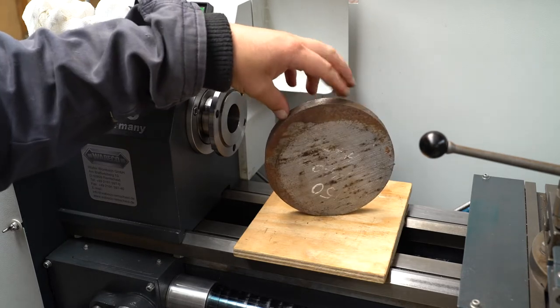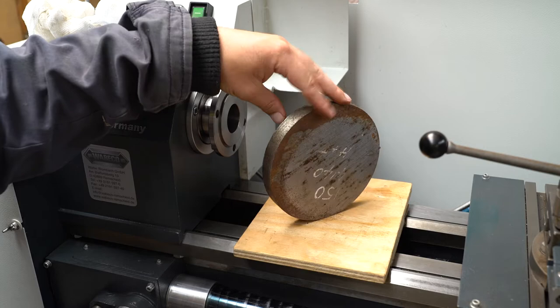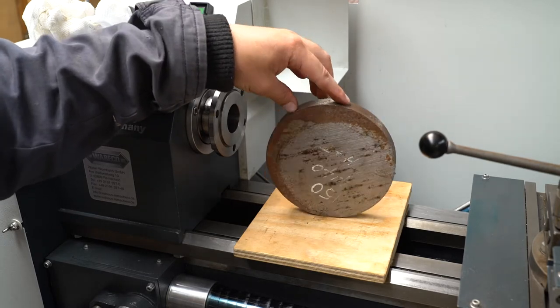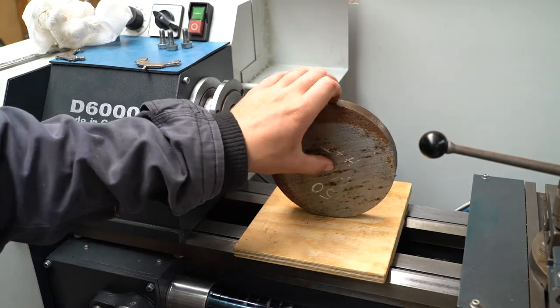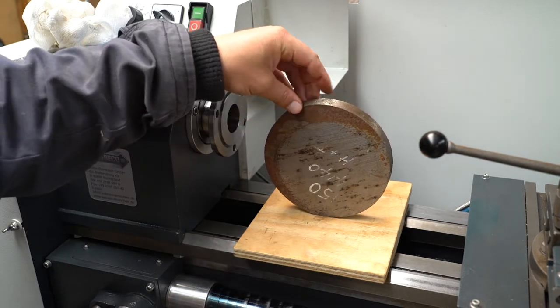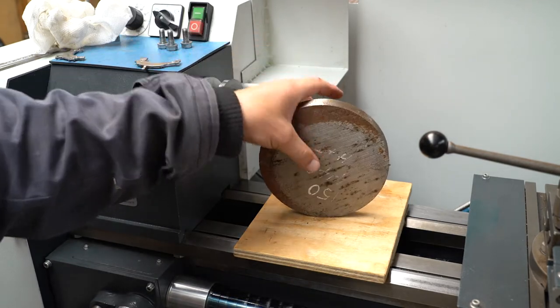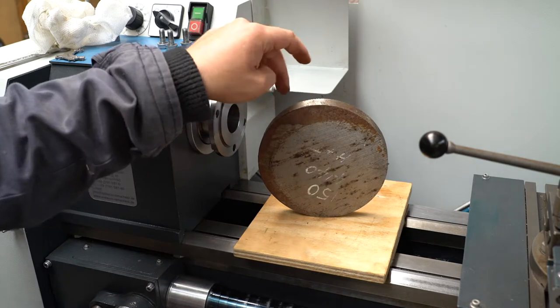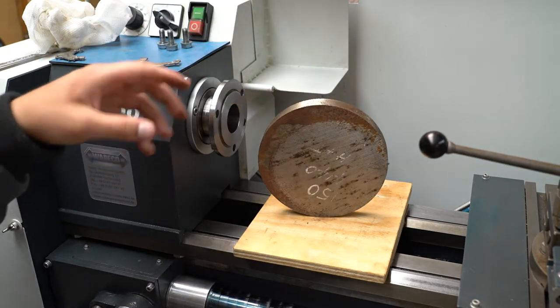Unfortunately it's wider than I can fit in any of my chucks. So what I'll be doing first is drilling a hole in the middle on the mill and then make some sort of fixture to hold it while I machine the outside. So let's get going.